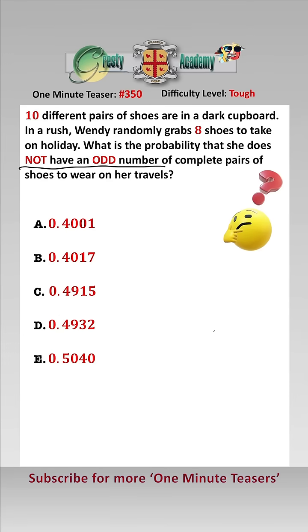So in order not to have an odd number of complete pairs of shoes, she must either have zero, two, or four complete pairs. Let's have a look at each one in turn.